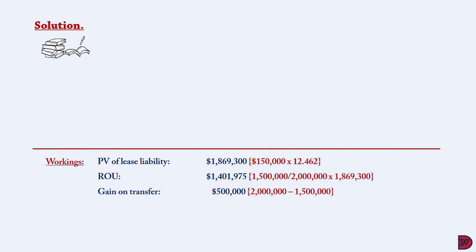There will be a total gain on transfer of $500,000, which is the difference between the fair value and the carrying value. The recognized gain is the proportion retained by the buyer: the fair value of $2 million less the present value of the lease liability of $1,869,300, divided by the fair value, then multiplied by the gain of $500,000. This gives a recognized gain of approximately $32,675.